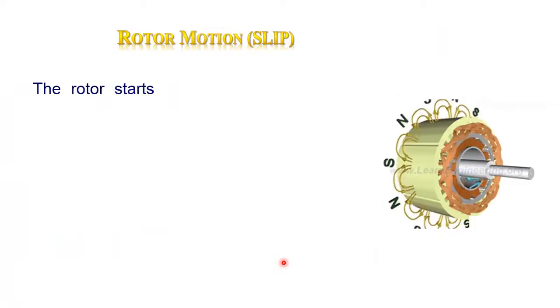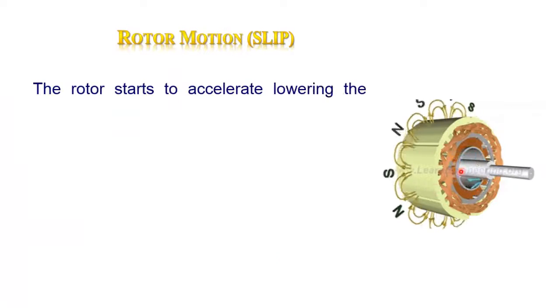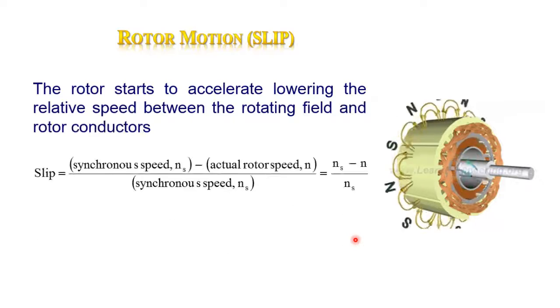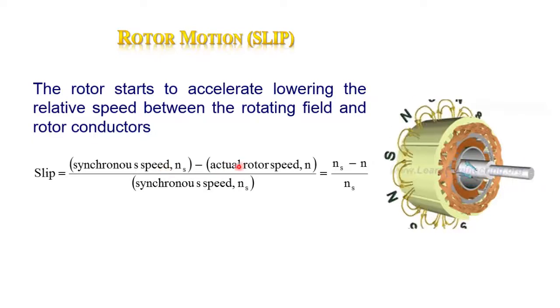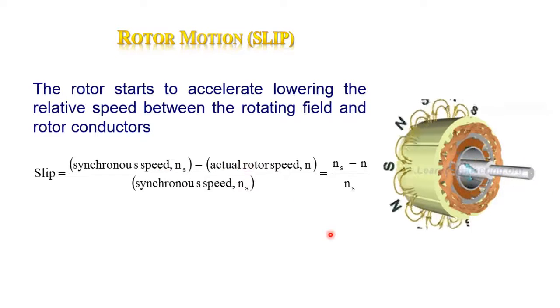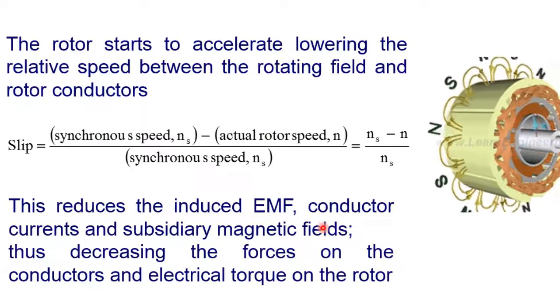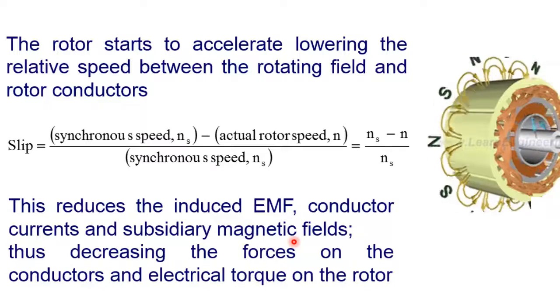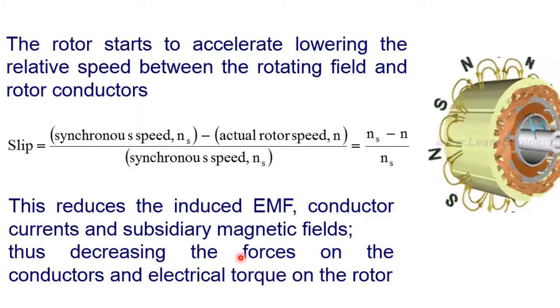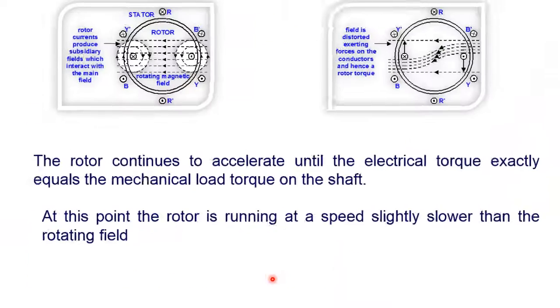The rotor starts to accelerate lowering the relative speed between the rotating field and rotor conductors. This is called rotor slip which is the difference between speed of rotating field and rotor conductors. As the relative motion or slip is reduced, the induced EMF, conductor currents, and subsidiary magnetic fields are also reduced.